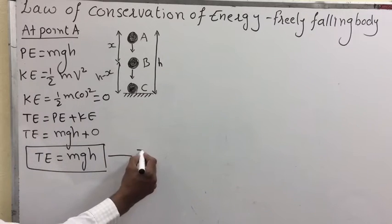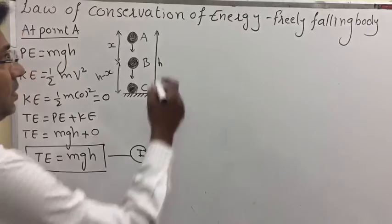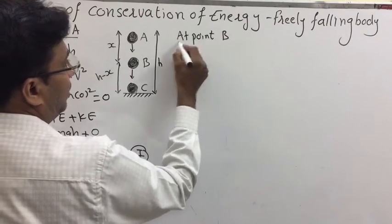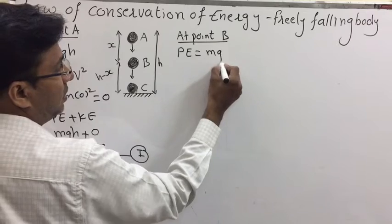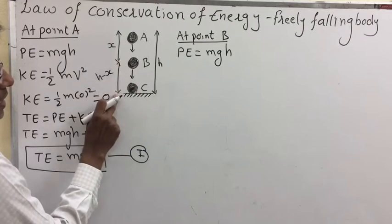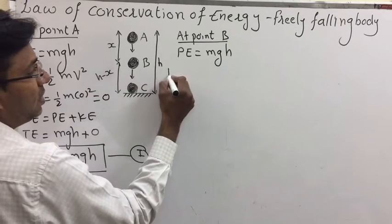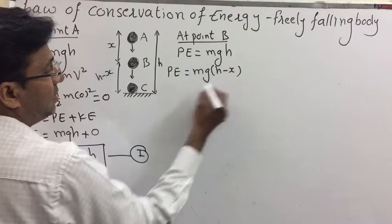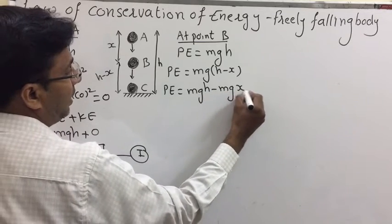Now we find total energy at point B. First, check potential energy at point B. The formula is mgh, but the height at point B is h minus x, so potential energy equals mg(h minus x), which expands to mgh minus mgx.